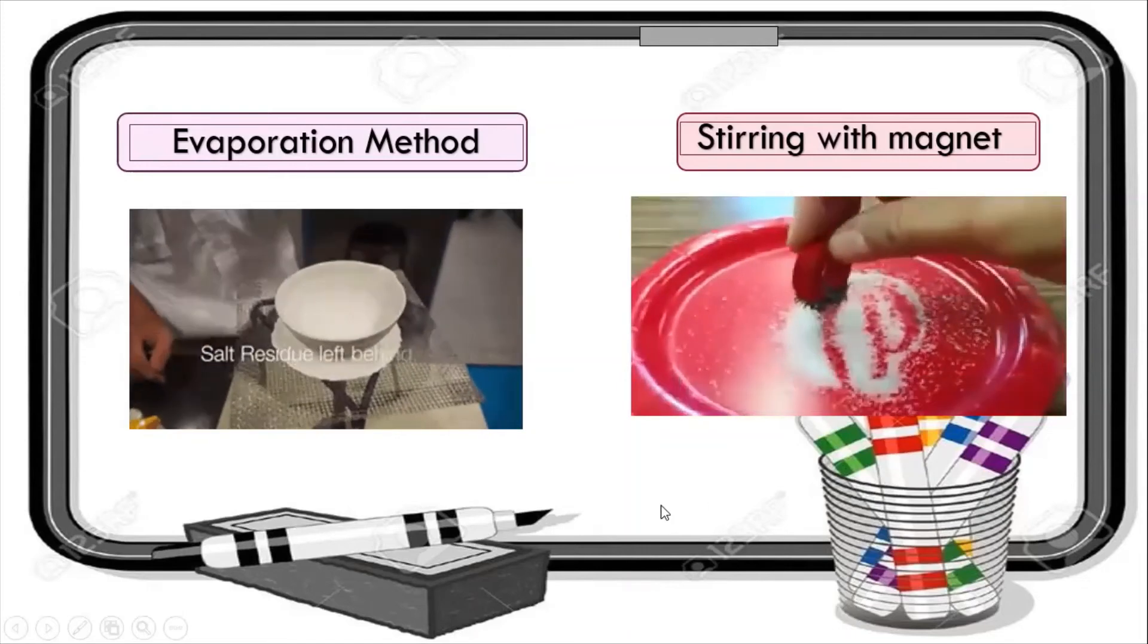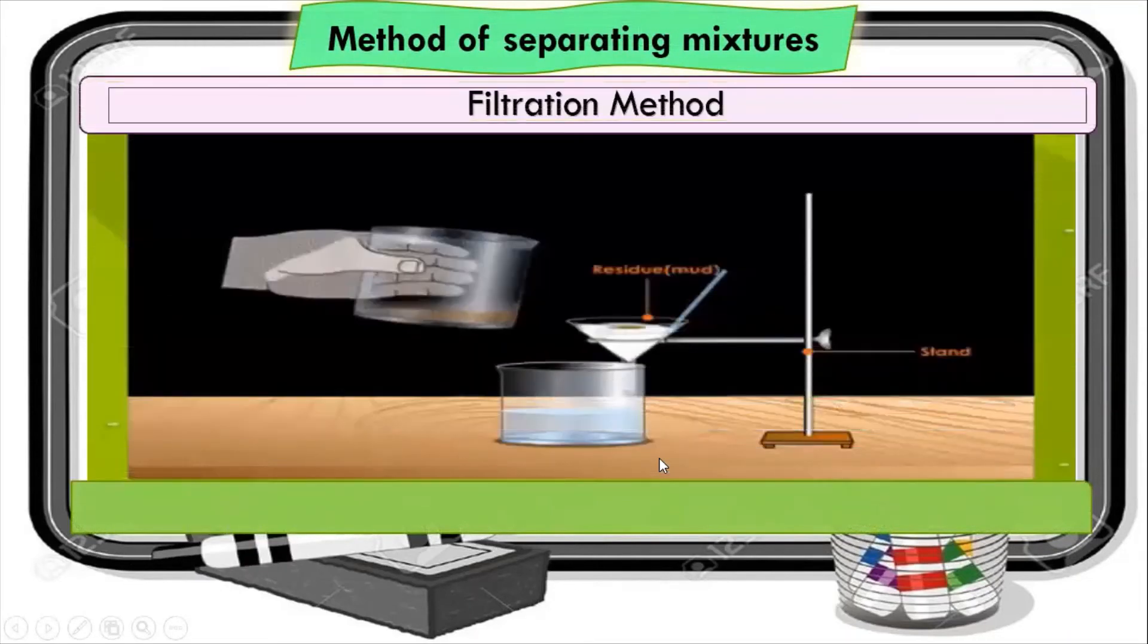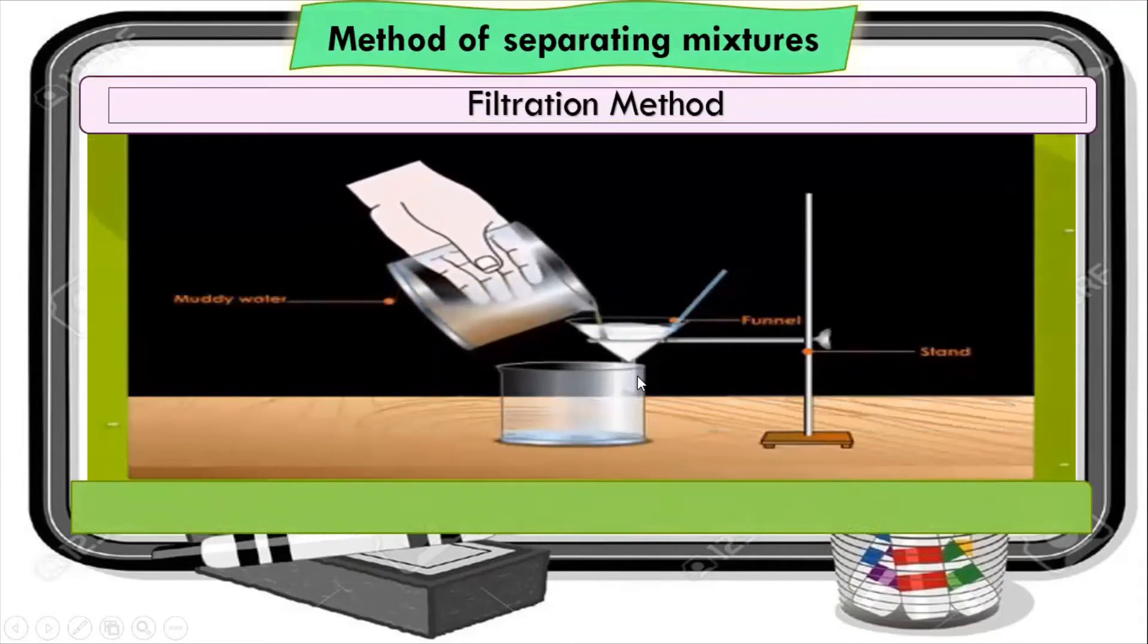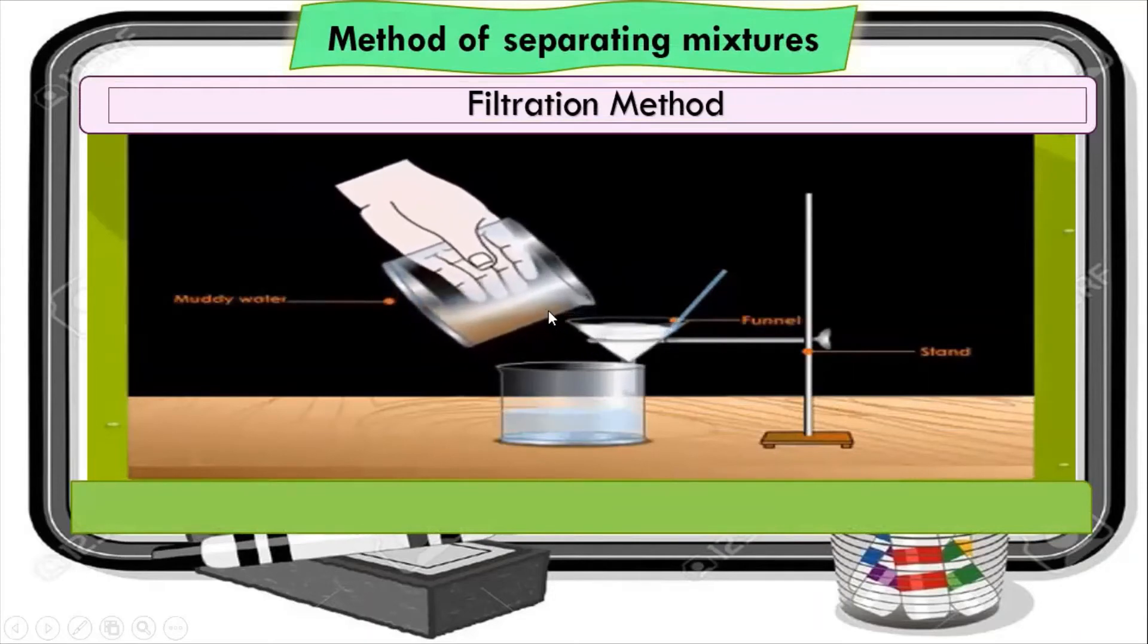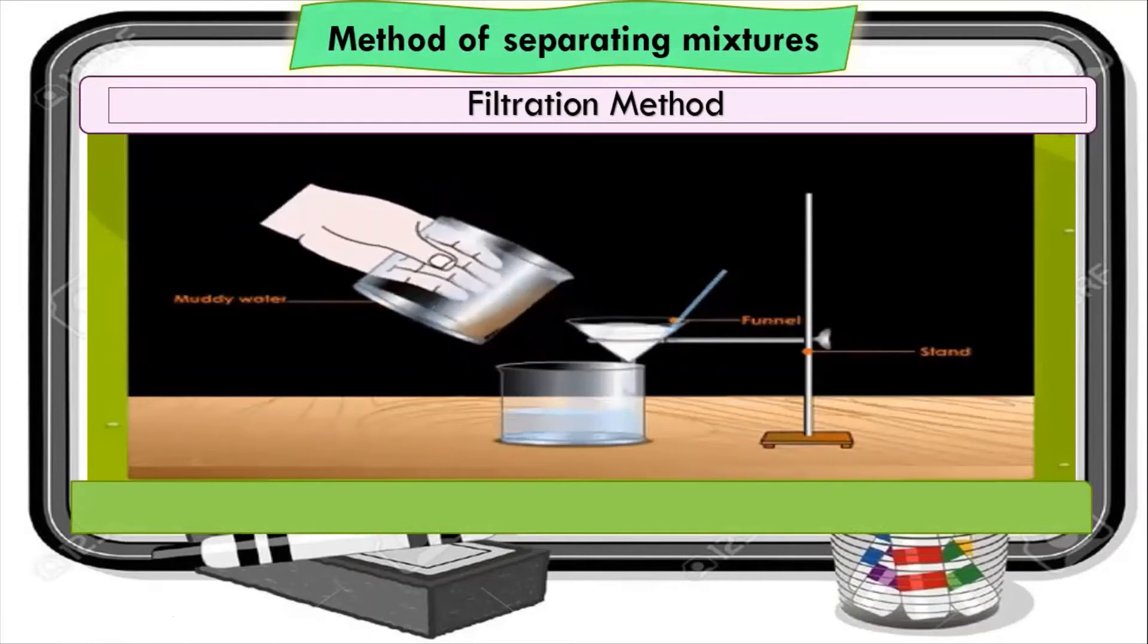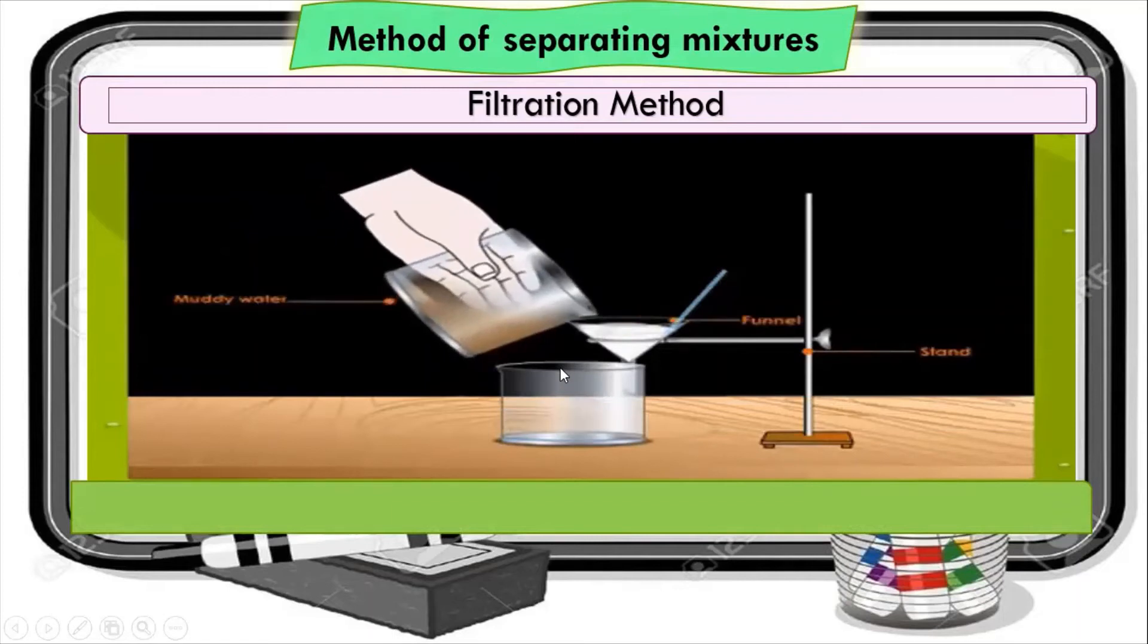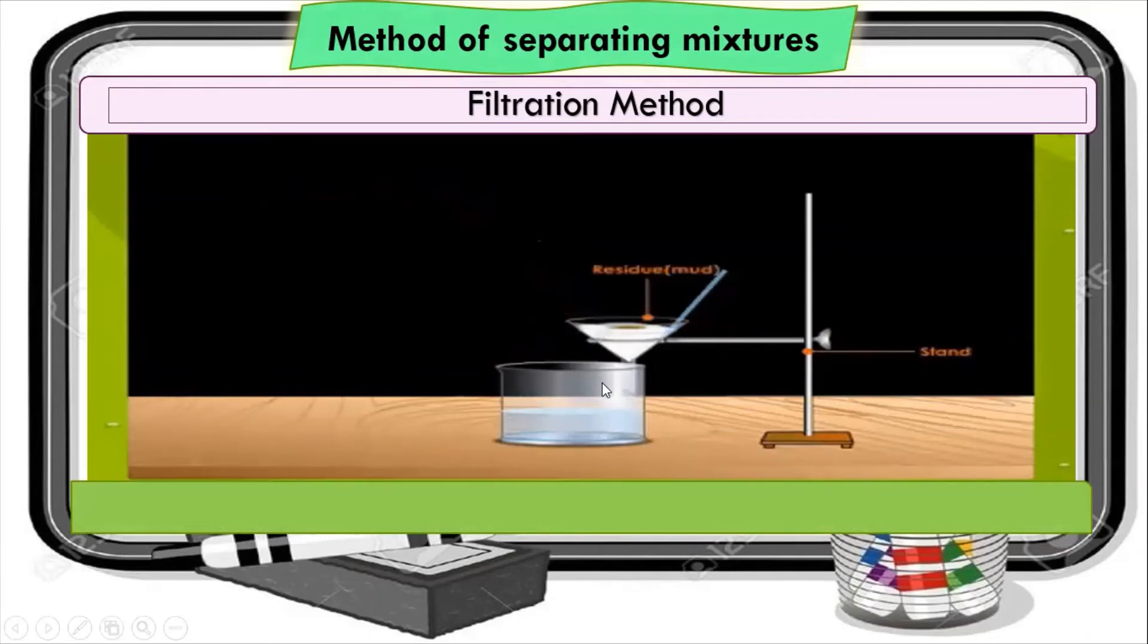By filtration method. In the filtration method, we fix the filter paper on the funnel and just pour the mixture of sand and water to the funnel. Because of the filter paper, all the sand residue is left on the filter paper and water will be drained off. So filtering is a way to separate a solid from a liquid. The water will pass through the filter paper, but the sand will be left on the filter paper.